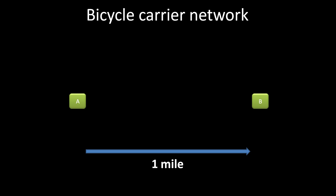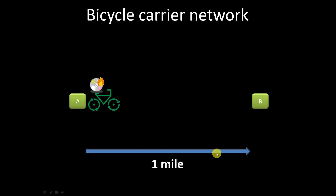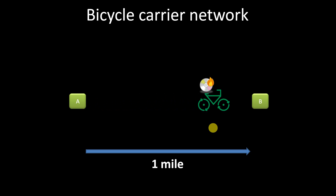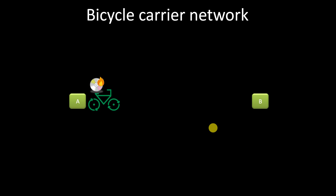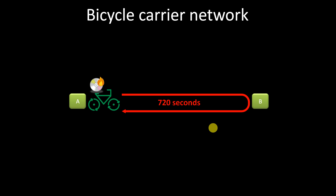Think of information as something that needs to be delivered from point A to point B, and let's say our only means of information delivery is a rider on a bicycle. We put information onto a DVD disc and ask our carrier to deliver it from point A to point B — the two points are one mile apart. We also want the carrier to come back and tell us if the DVD was delivered successfully. The carrier can make a round trip in 720 seconds, riding at 10 miles per hour. This delay of 720 seconds is what network engineers call latency.